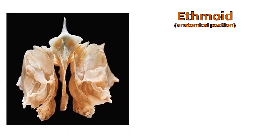The ethmoid bone — this one's tricky. If I could draw a skull, this one would be right between the eyes. The problem is that it's obscured by other bones, and from every aspect it's tough to see. So one of the best ways of talking about the ethmoid is to take it out of the skull completely and look at it unarticulated from everything else.